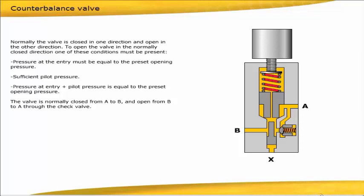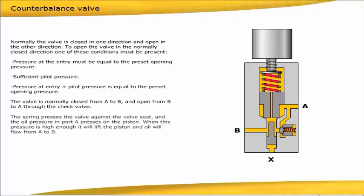The valve is normally closed from A to B, and open from B to A through the check valve. The spring presses the valve against the valve seat, and the oil pressure in port A presses on the piston. When this pressure is high enough, it will lift the piston, and oil will flow from A to B.